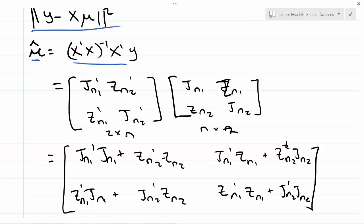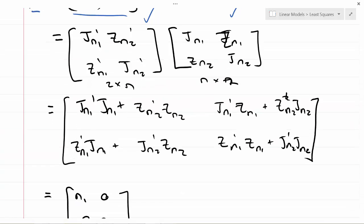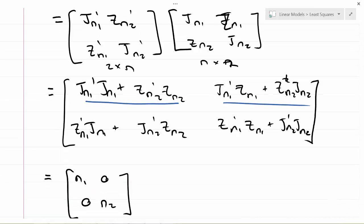If I were to write out my x transpose x matrix, I could write it out in my partition matrix formula there. If I were to just go through the rules of multiplying out partition matrices, I get J_n transpose J_n plus Z_n2 transpose Z_n2. I won't read the whole thing out here, so go through the matrix manipulations and verify.